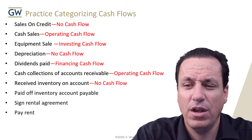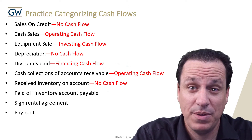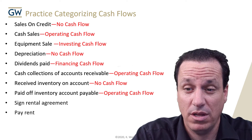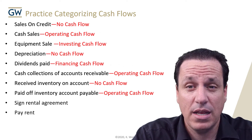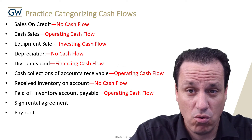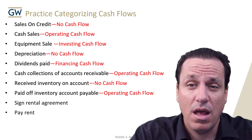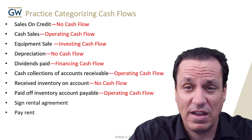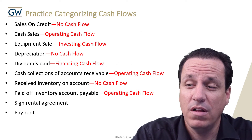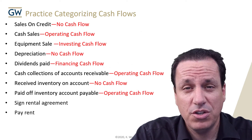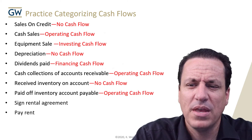Paid off inventory account payable — this would be an operating cash flow. You had some inventory that you purchased on account and you paid it off. That's related to your operations, so it's going to be operating cash flow.